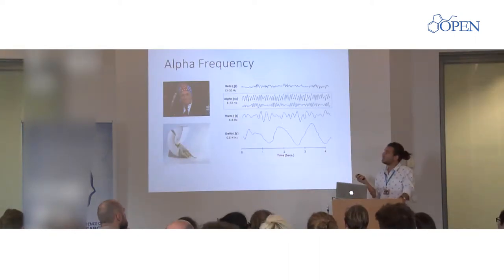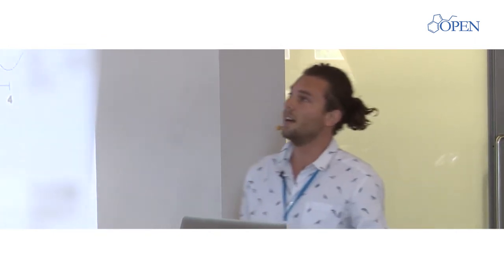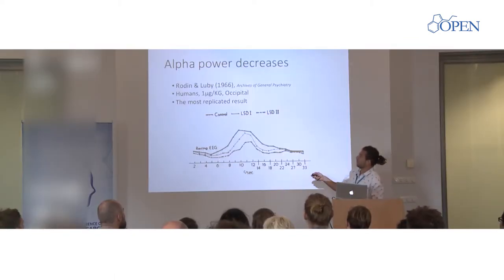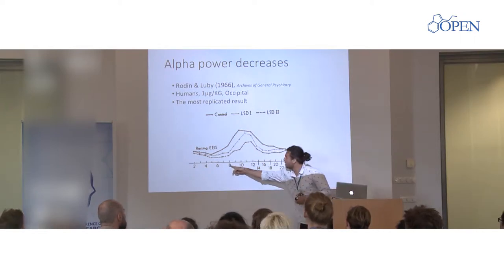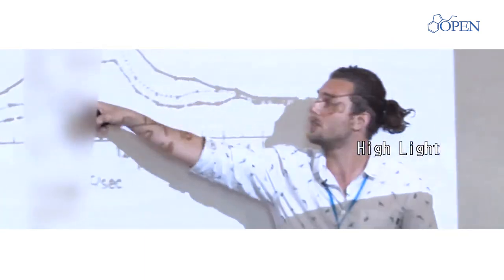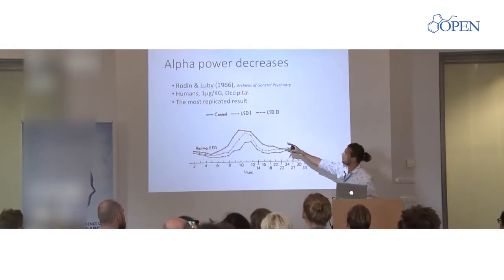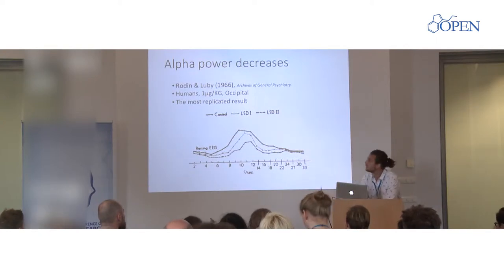Alpha frequency is quite relevant to the psychedelic state. We can measure with MEG or EEG different frequencies in the brain — alpha is 8 to 13 hertz, meaning 8 to 13 cycles per second of activity, and this is a quite replicated result from the 50s and 60s and recent studies. We can do a power spectrum of different frequencies, and from 8 to 13 Hz this is the alpha frequency. It's strongest at rest with eyes closed in occipital visual areas at the back of the brain, and we see that under LSD this is reduced.